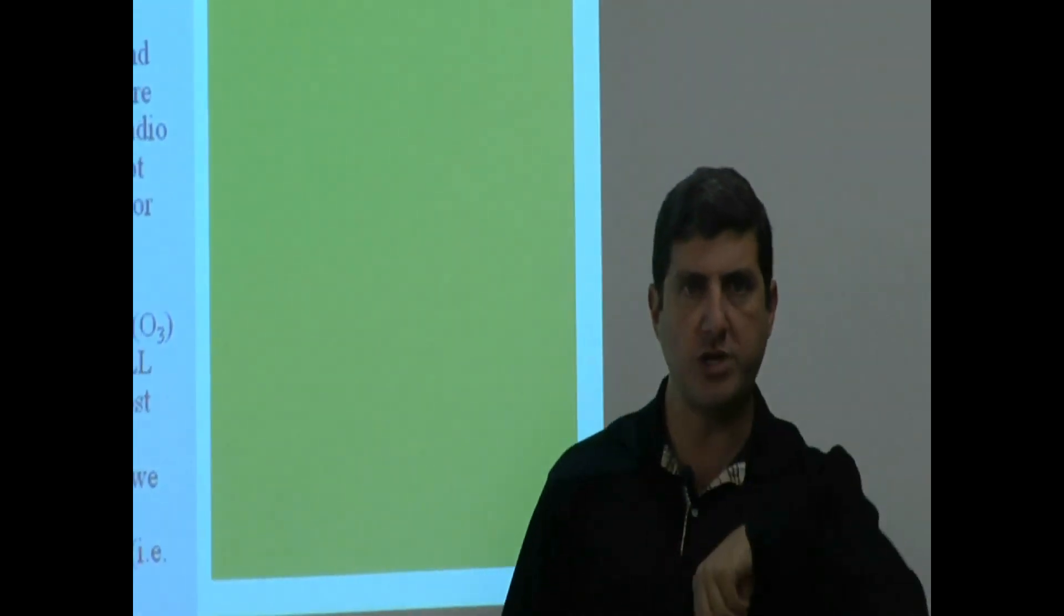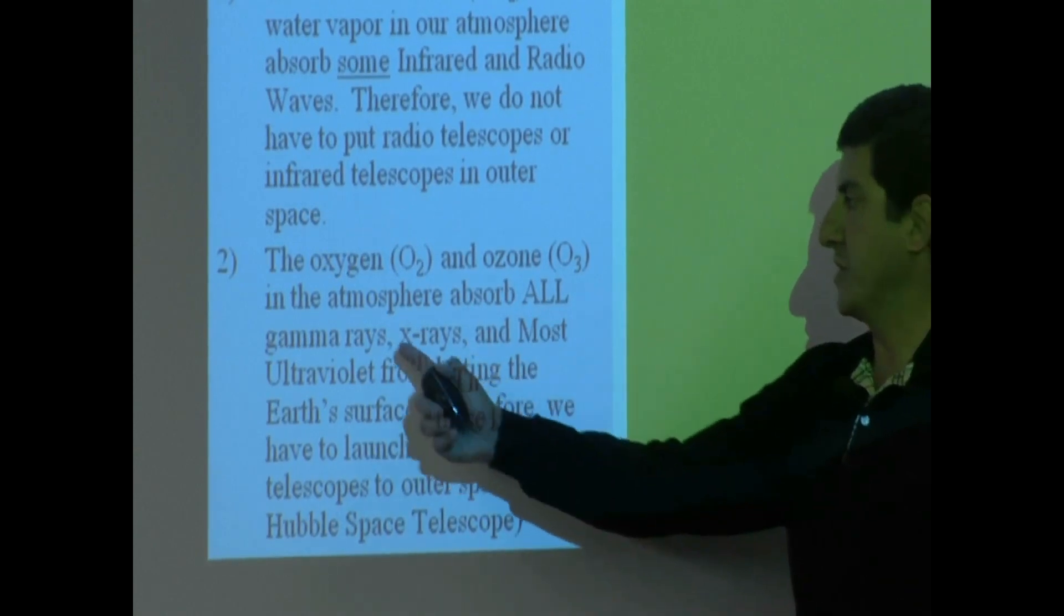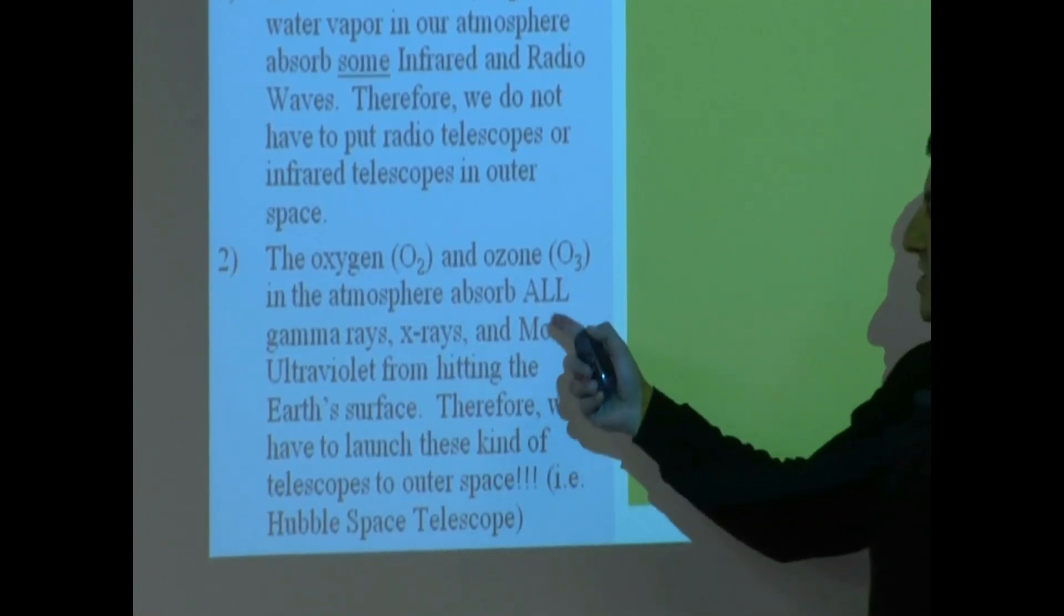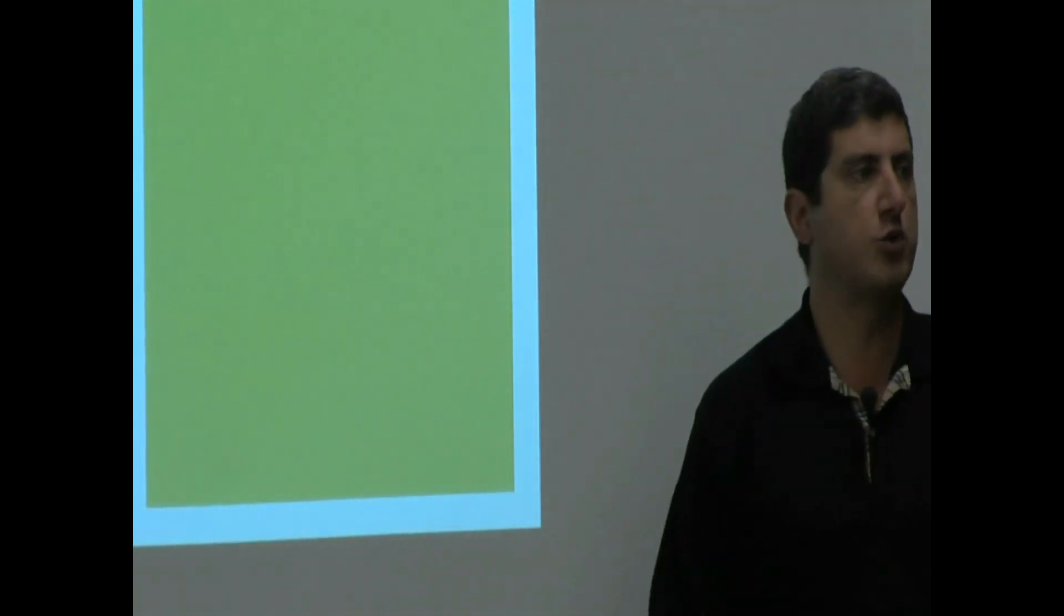The oxygen in the atmosphere and the ozone layer, these two working together, so ozone layer is a particular molecule known as O3, three oxygens bonded together, and oxygen is the oxygen we breathe, it's O2. They help to absorb all of the gamma rays, X-rays, and most of the ultraviolet from hitting the Earth's surface. In terms of telescope, what does that mean? Therefore, we have to launch these kind of telescopes to outer space if we want to observe the sky. For example, such as the Hubble Space Telescope.